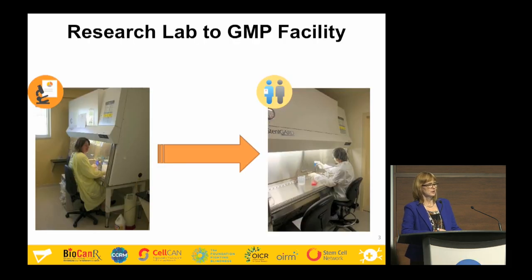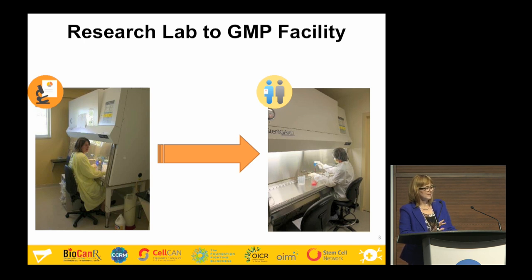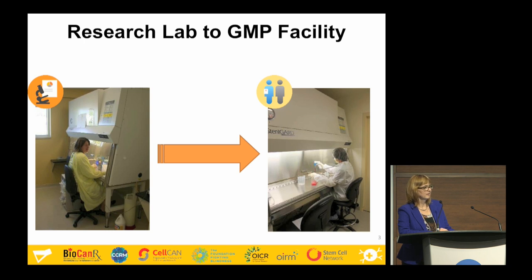When you go from the research lab to a GMP facility in order to produce for a clinical trial where your product is used in humans, you can see some differences in cleanliness, environment, and how the installation is built. On the left is a picture of our research lab, and on the right is our clean room. There is more gowning, less clutter, and the flow hood remains the same.